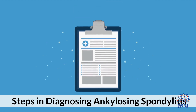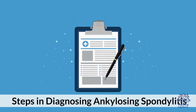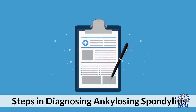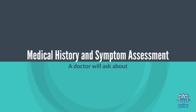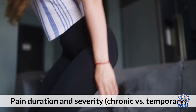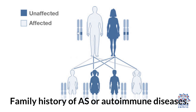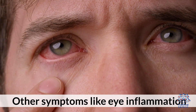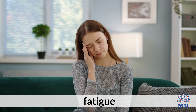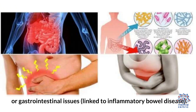Steps in Diagnosing Ankylosing Spondylitis. Step 1 — Medical History and Symptom Assessment: A doctor will ask about pain duration and severity (chronic vs. temporary), family history of AS or autoimmune diseases, and other symptoms like eye inflammation, fatigue, or gastrointestinal issues linked to inflammatory bowel disease.